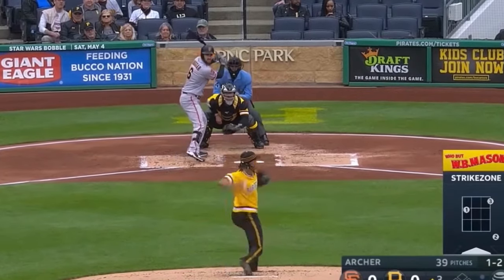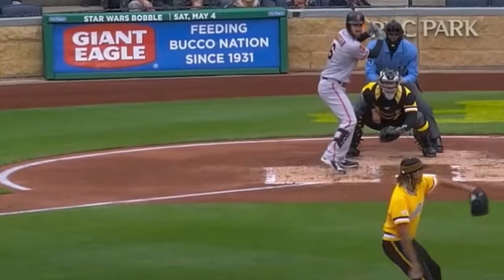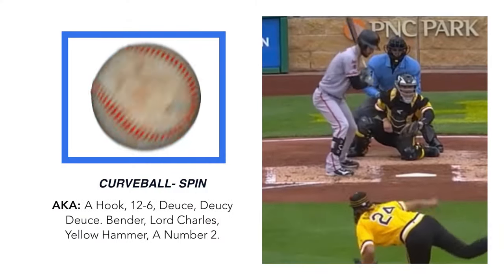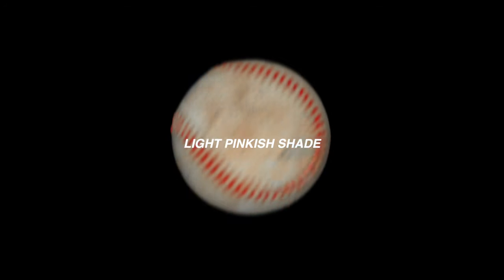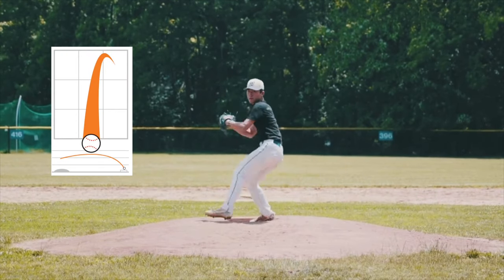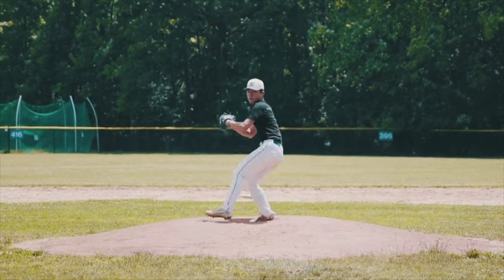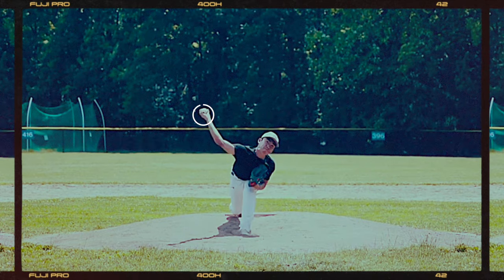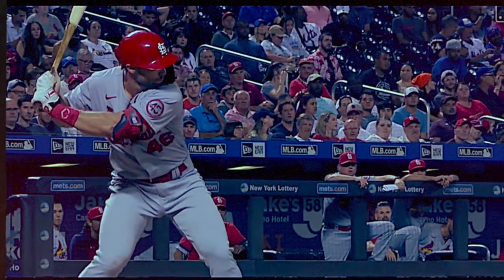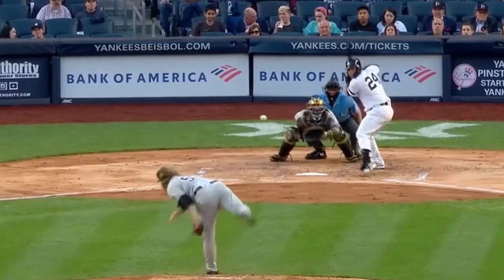Curveball, aka the hook, 12-6, deuce, deucey deuce, bender, lower charles, yellow hammer, a number two. Average major league curveball: 70–80. Spin: an even lighter shade than other pitches. In most cases, the slowest spin rate, so there's a light pinkish shade to the ball spin. The movement: a good breaking ball will have a Bugs Bunny loop 12-6 drop — think a clock with hands at 12-6. A beginner's curveball may have the index finger up and off the ball. Approach: hitters can learn to see the pop to recognize the curveball out of the pitcher's hand. If it starts low, it'll end up in the dirt. If it starts high, it'll end up in the strike zone. Hitters have to post up so they're not chasing the ball out of the zone.